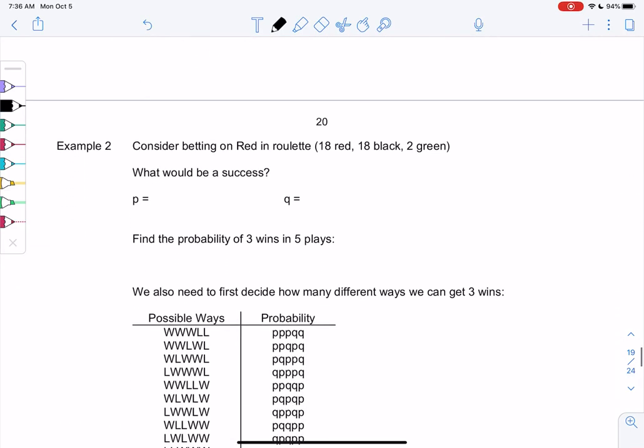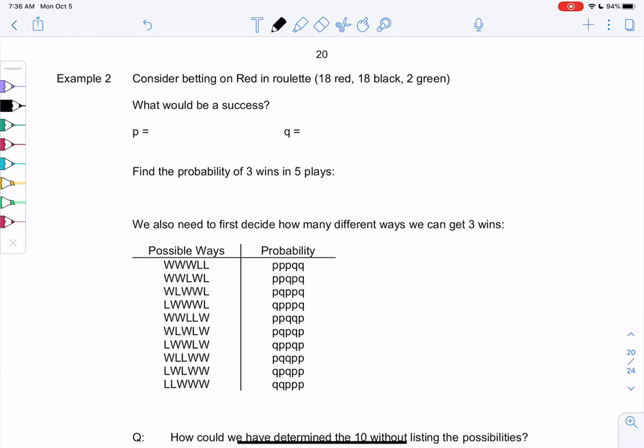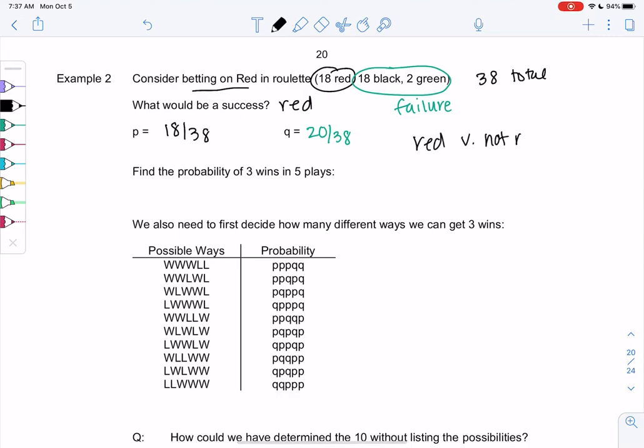So I'm going to alter roulette to make it Bernoulli. And so if we're betting on red, red is our success. And so the probability of a success would be 18 out of 38. There's 38 total if we don't remember. And then the reason I can make this Bernoulli is because technically, since black and green are both failing, I can just group them together as a failure. And so the probability of that would actually be 20 out of 38. So basically we're doing red versus not red. Because I'm really not interested in black or green. I just care that it's not red, right? Because I've lost.